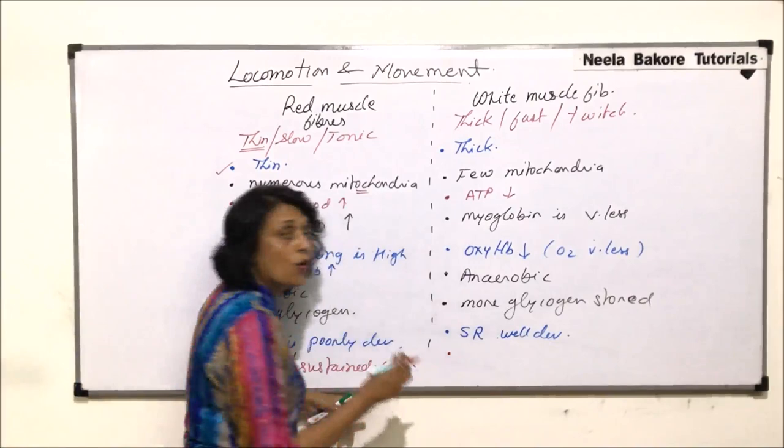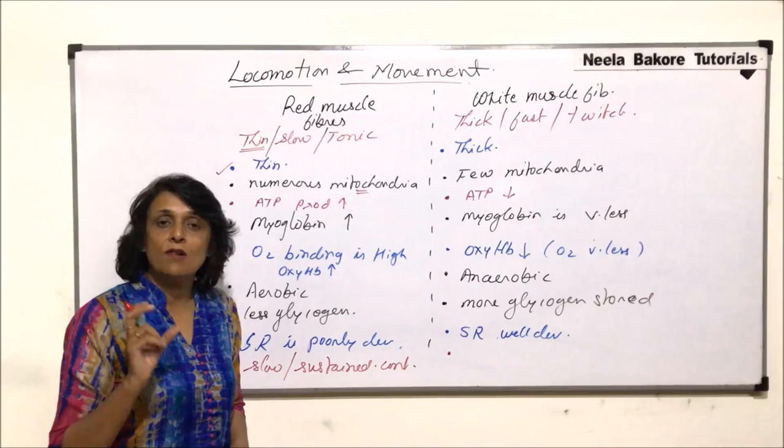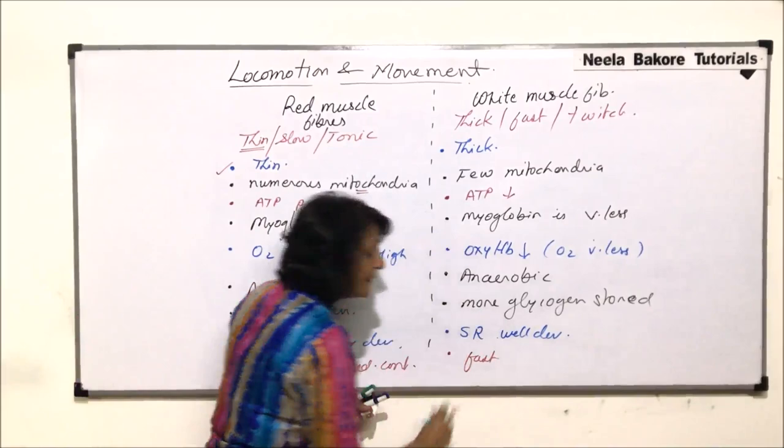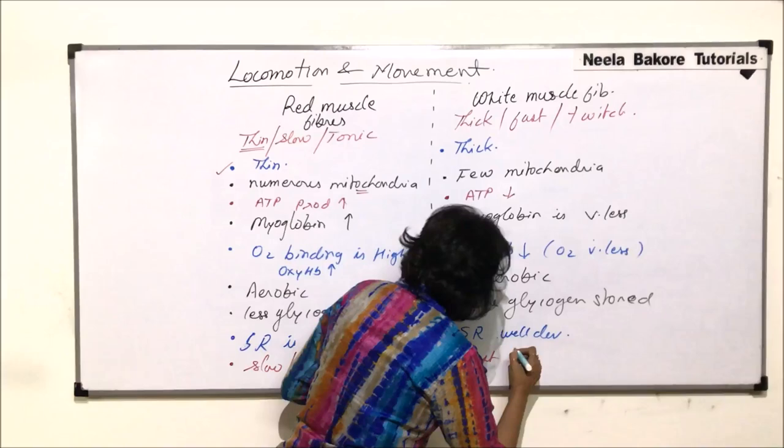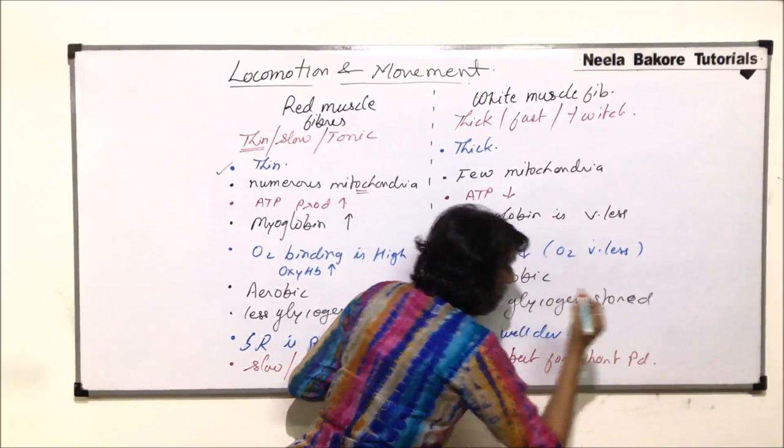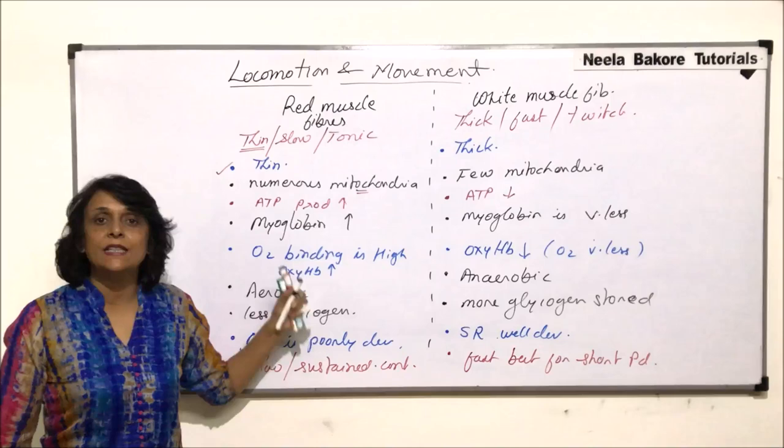White muscle fibers show very quick, fast contractions, but the muscle remains in a contracted state for only a very short period of time. So white muscle fibers show very fast contraction but for a short period of time. Let us now write down the examples for both types.